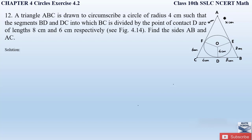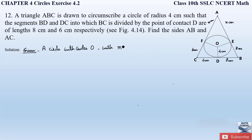To find the lengths AB and AC, there are two methods we will apply. First we apply Heron's formula, and second we apply the area of a triangle formula, dividing the whole triangle into 3 parts to find the value of x. Given: a circle with centre O, radius = 4 cm = OD. Triangle ABC circumscribes the circle, with BD = 8 cm and CD = 6 cm.